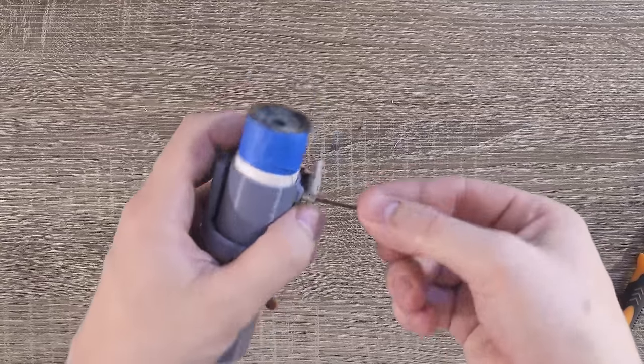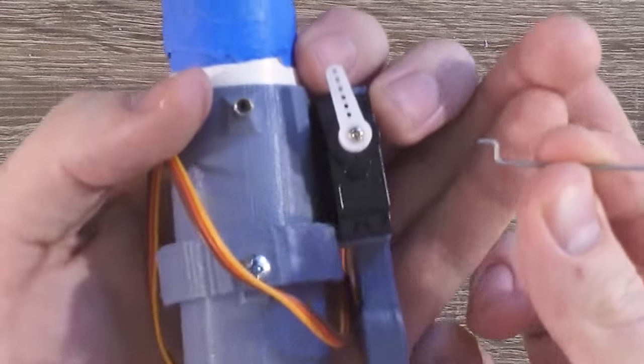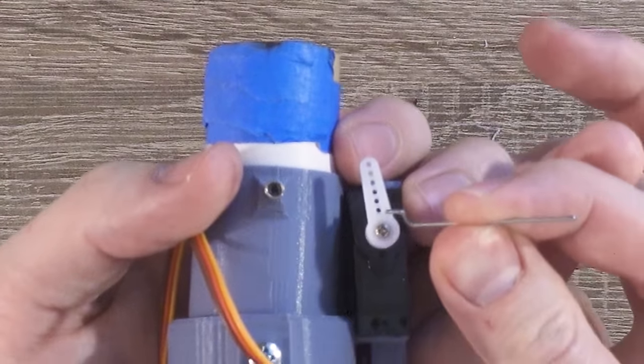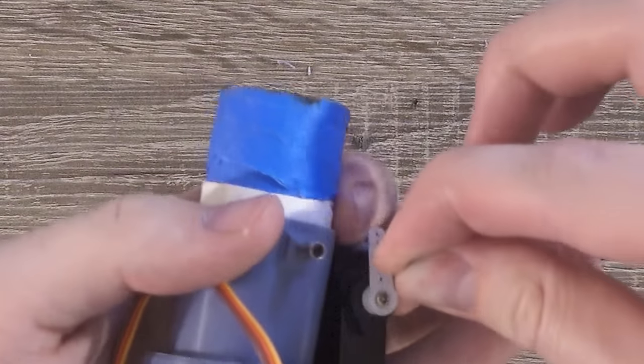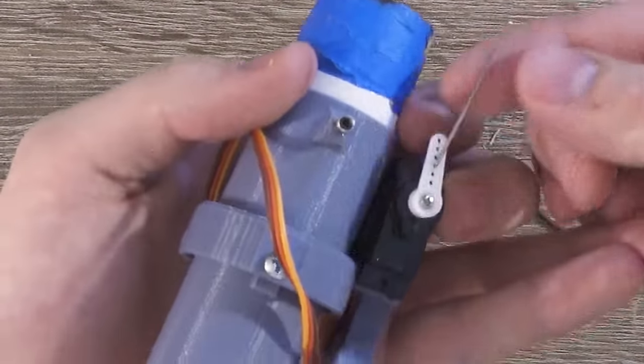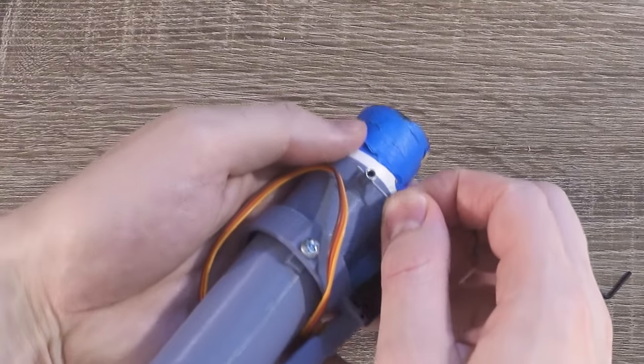Using the hex wrench again, loosen and then take out the pushrod from earlier. Going from the hole nearest the center, count one, two, three, and insert the bent end of the pushrod there. Now thread the pushrod back through the linkage stopper.